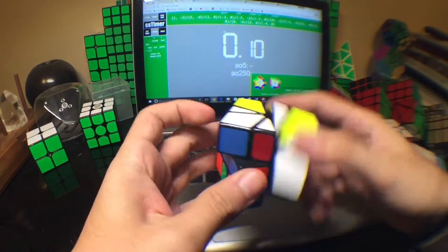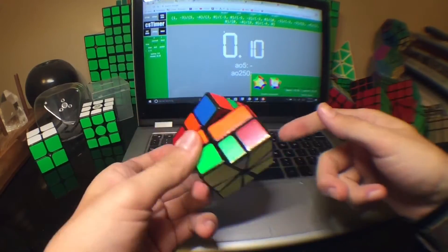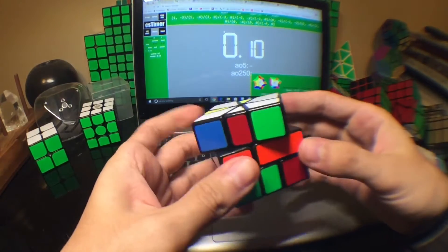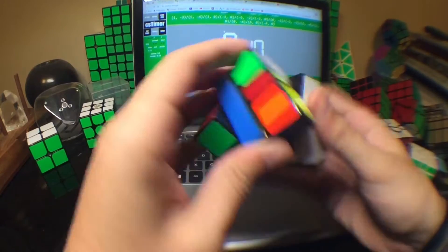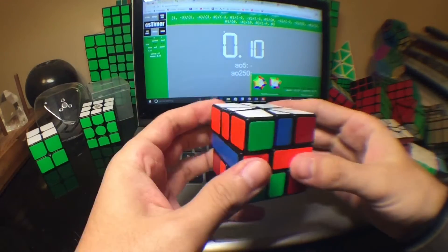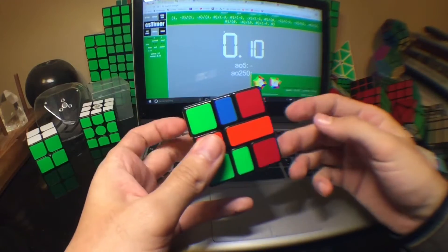Hopefully you followed that. CO I would do like that, then we've got the adjacent EO. Not much to say about CP here, it's just obvious. We've got two adjacents, two bars on either side.